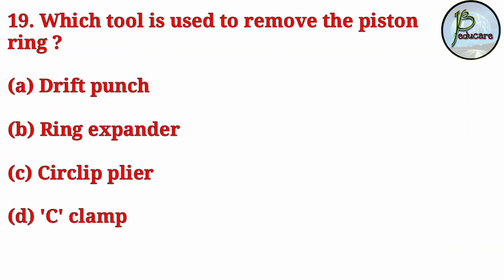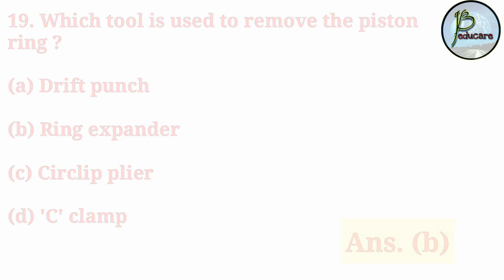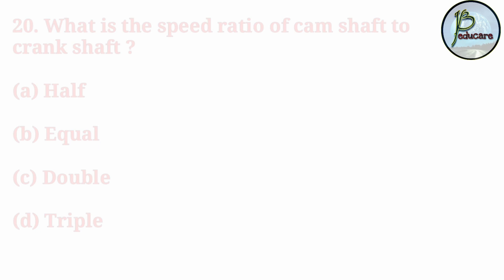Which tool is used to remove the piston ring? To remove a piston ring, which tool is used? The correct answer is Answer B — ring expander. A ring expander is the tool used to remove the piston ring.